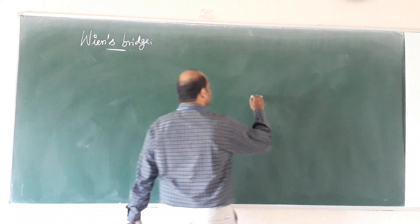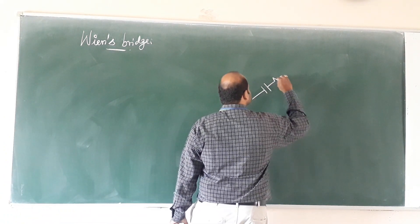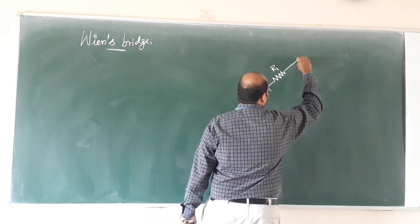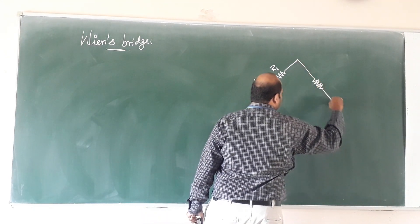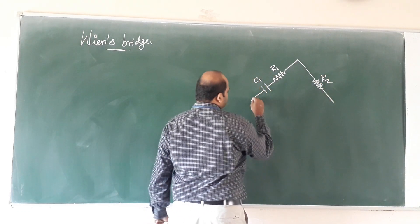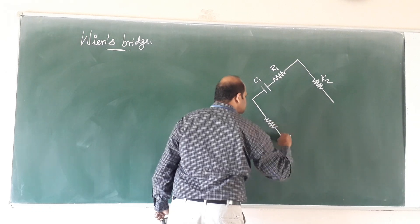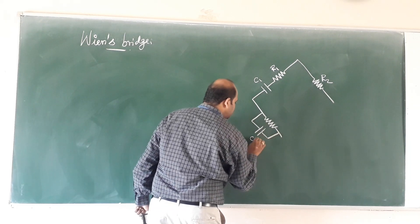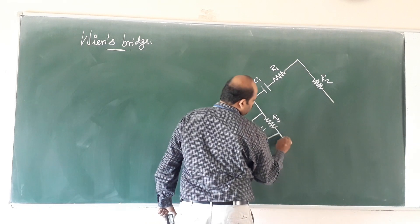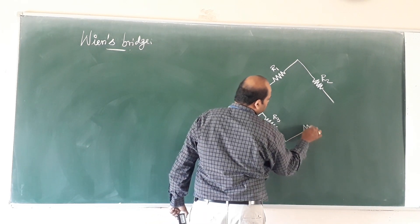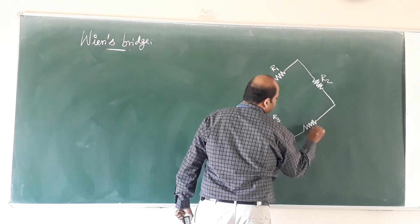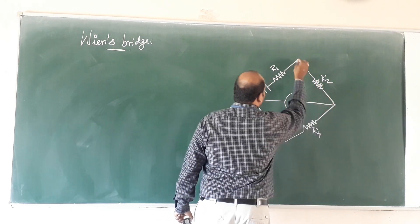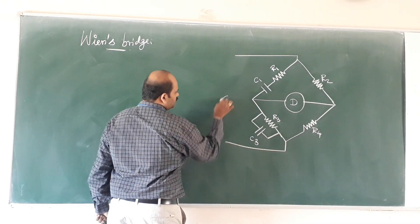Let us see the diagram. Arm 1 consists of a capacitance in series with the resistance, denoted as C1 and R1. Arm 2 consists of a pure resistance R2. Arm 3 consists of a capacitance in parallel with its internal resistance R3. Arm 4 consists of a pure resistance R4. Along with that, the bridge consists of a detector and an AC source.